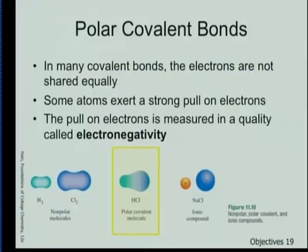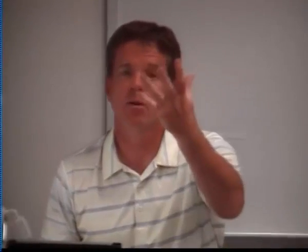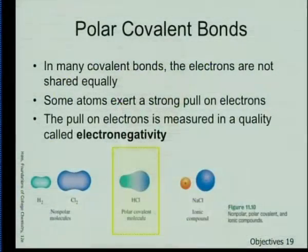A polar covalent bond is a type of covalent bond. If we drew a tree of bond types: ionic bonds are formed by anions and cations; covalent bonds are formed by sharing electrons. Within covalent bonds, we have polar ones and non-polar ones, resulting from unequal sharing.